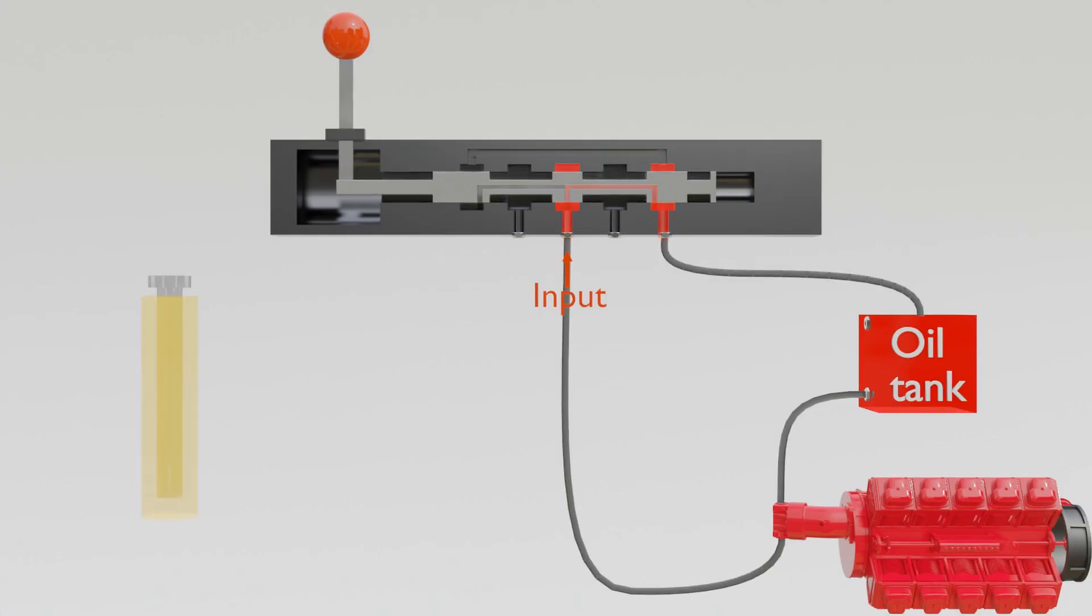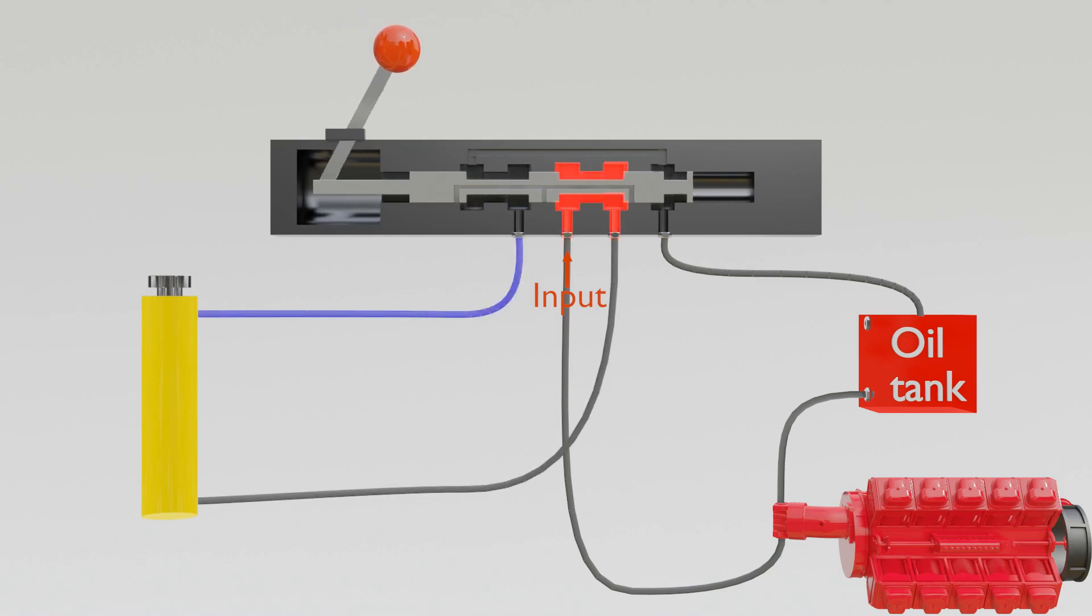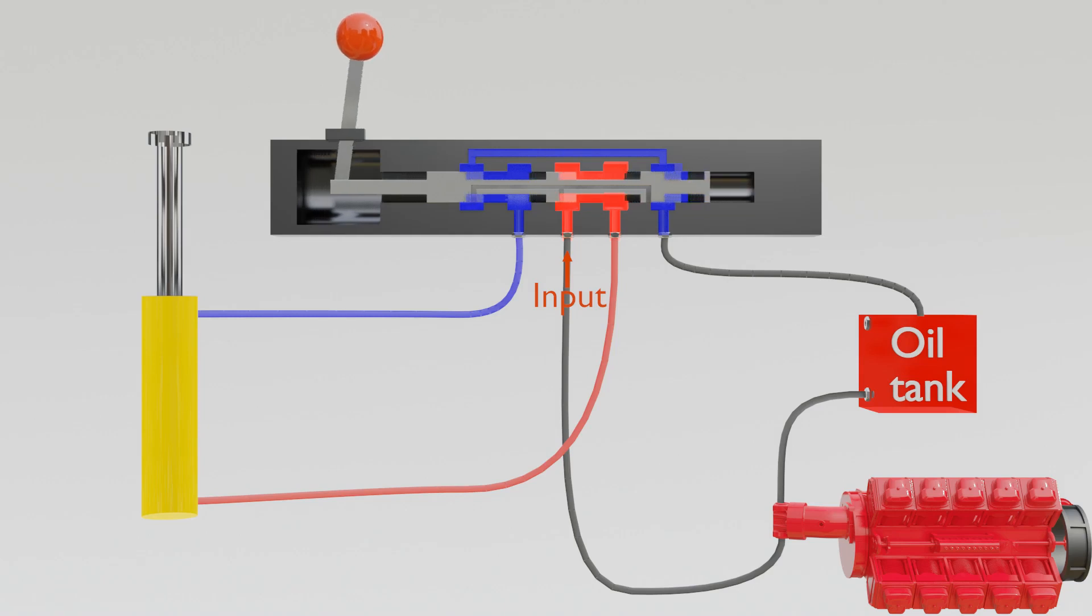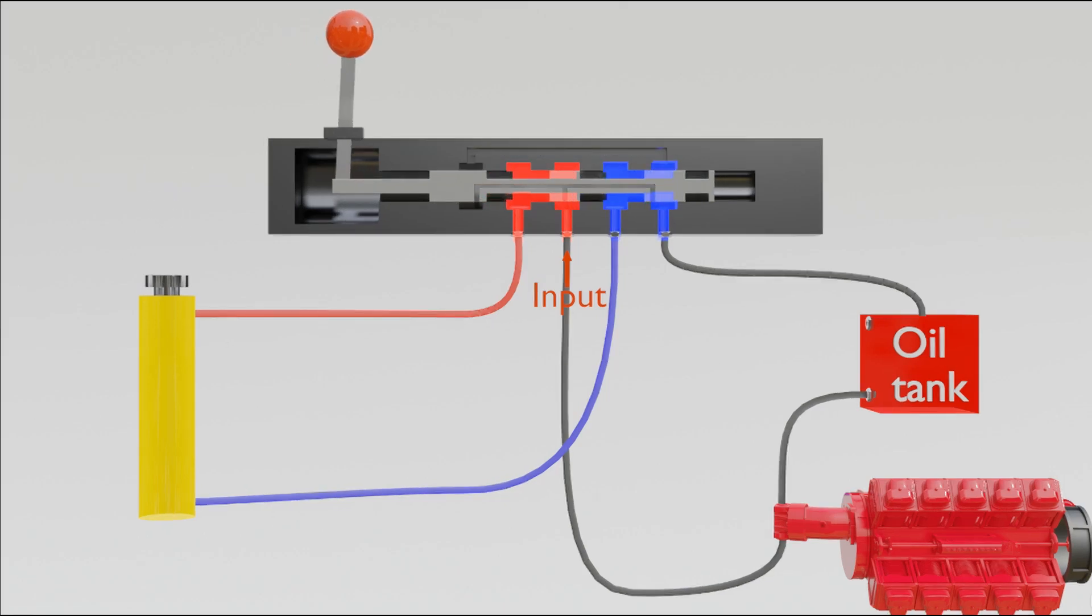Now let's push the lever to the right, causing the spool to pull left. Now we have opened the input to the output 2, the extending side, and blocked the path to output 3. As we pull the lever to the left, the spool pushes to the right, and now the input is connected to the output 1 only, the retracting side.